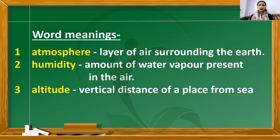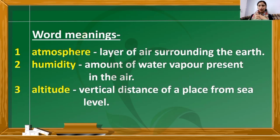Third: altitude is the vertical distance of a place from sea level. So the three word meanings are: atmosphere — layer of air surrounding the earth; humidity — the amount of water vapor present in the air; and altitude — the vertical distance of a place from the sea level.